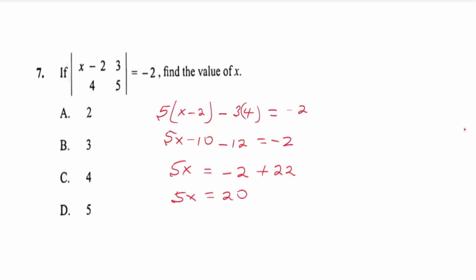So 5x will be equal to 20. Dividing both sides by 5, x will be equal to 4. And that means the correct answer here is option C. We move to the next question, which is 28.